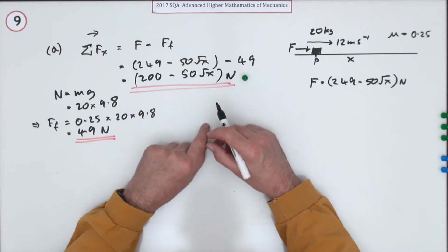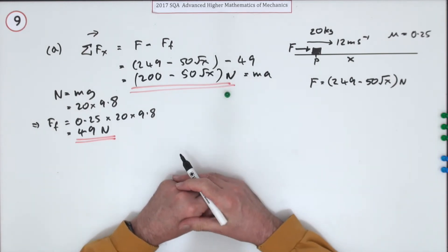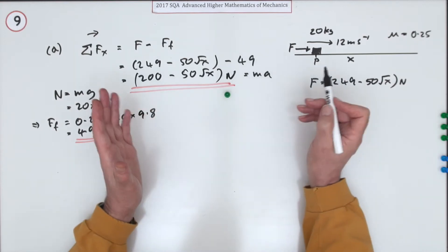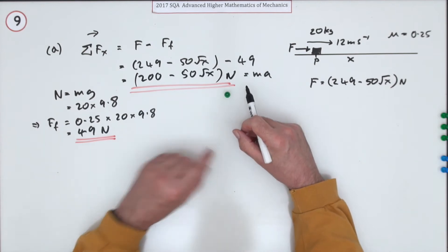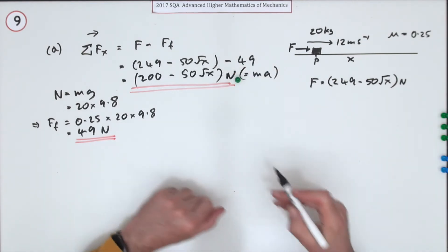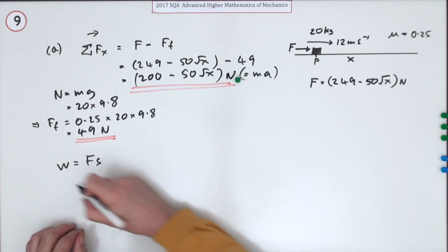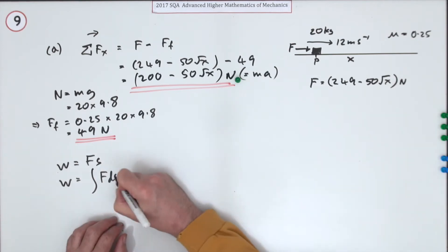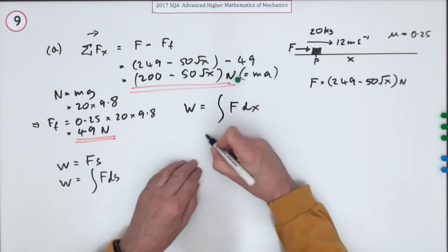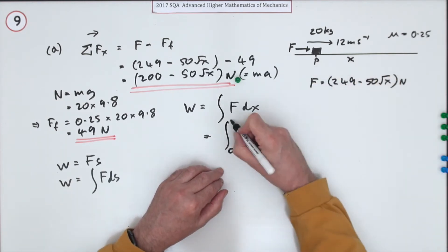If the question hadn't guided you toward finding the work done, you could divide that resultant force by 20 to get acceleration and find velocity from there. But it wants the work done. Work done is force times distance, and for a variable force depending on position it's the integral of F dx. So work done = ∫₀¹⁰ F dx, integrating from 0 to 10 as the question asks for the first 10 meters.